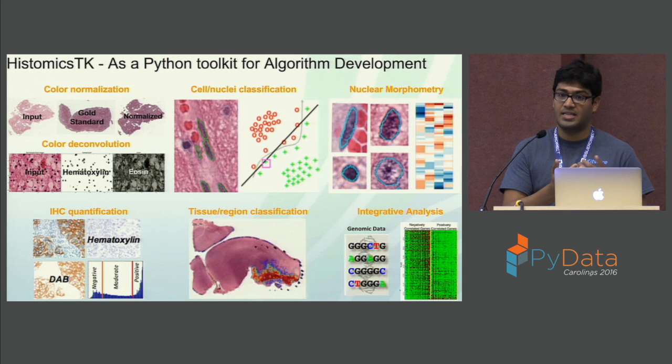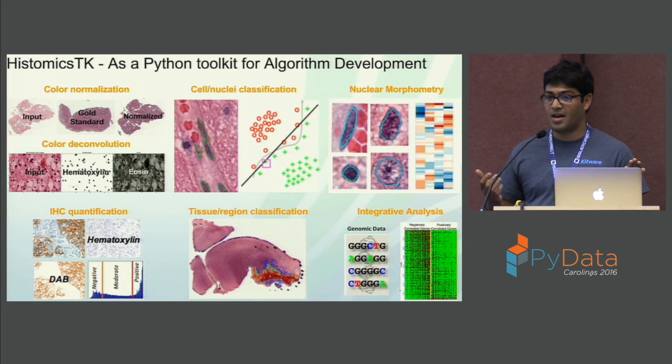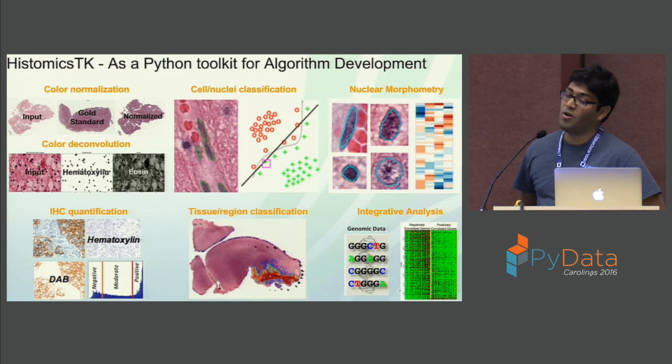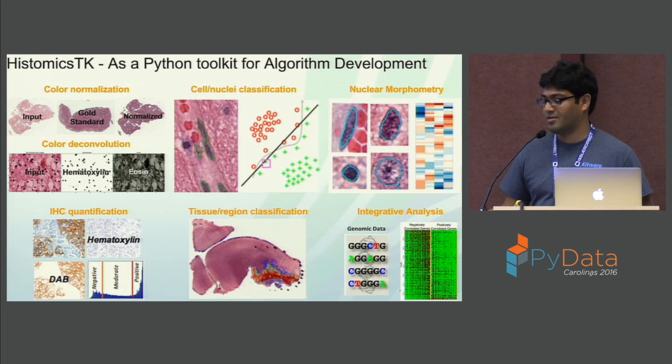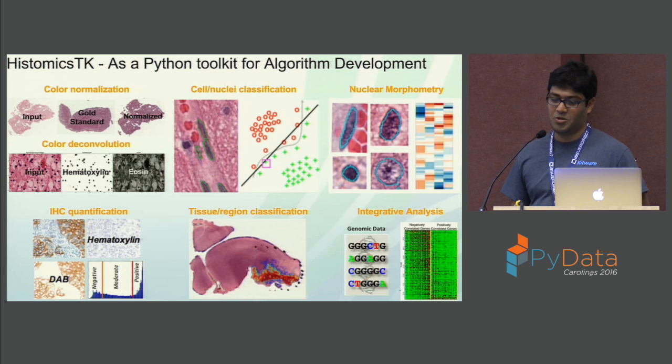If you have a stain that highlights nuclei and a stain that highlights cytoplasm and extracellular structures, you can separate them and then run nuclei detection algorithms. We already have nuclear morphometry algorithms. We are working on cell and nuclear classification algorithms, immunohistochemistry quantification — which is about staining with proteins you're interested in — and tissue region classification. And lastly, integrative analysis with genomic data.